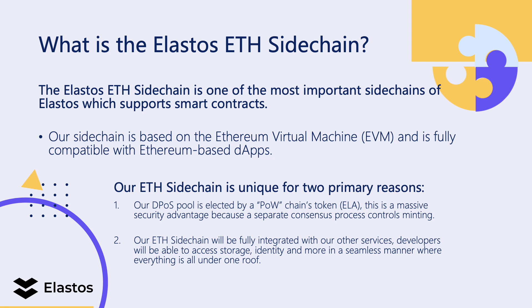The Elastos Ethereum sidechain is one of the most important sidechains of Elastos because it supports smart contracts. Our sidechain is based on the Ethereum virtual machine and is fully compatible with Ethereum-based DApps. This makes onboarding developers very easy because most developers already know Solidity, which is the Ethereum smart contract language.